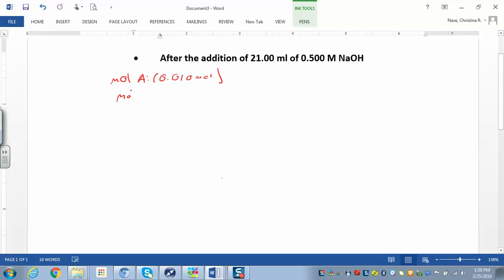And then our moles of our base, that's going to change because we just added - we started off with 0.5 molar and we added 21 mls. That's 0.0210 liters. So we're going to work all that out and end up with 0.0105 moles.